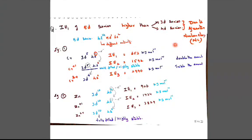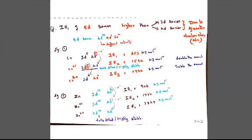For example, chromium has the configuration 3D⁵ 4S¹. Removing one electron from 3D⁵ gives chromium⁺. The first ionization energy is 653 kilojoule per mole. From the second ionization, the 3D⁵ half-filled configuration is very, very stable. Losing one electron from this half-filled configuration means it becomes 3D⁴, so more energy must be applied — 1592 kilojoule per mole, nearly double the amount.